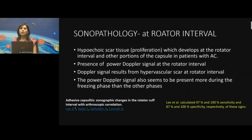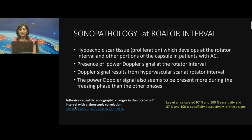Presence of a power Doppler signal indicates hypervascularity or activity, and this can be seen in the early stages of adhesive capsulitis. The power signal resulting from hypervascular scar at the rotator interval may not be seen in the later stages of the disease — it is seen in early stages where the synovial proliferation is happening, from the freezing to partly frozen stages. Lee et al. demonstrated a sensitivity and specificity of almost 97% to 100% when a hypoechoic proliferative tissue with hypervascularity within is seen.